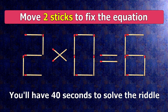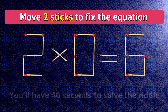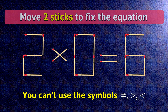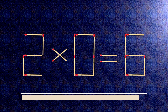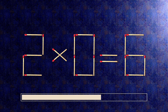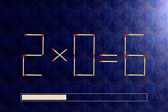We have the equality 2 times 0 equals 6. Our equality is wrong. We need to move two matches to make our equality correct.